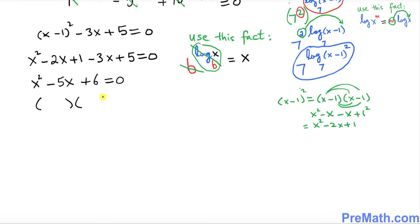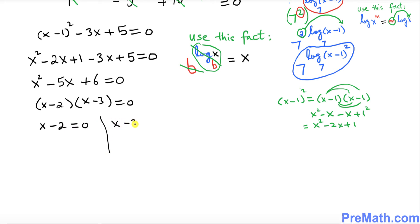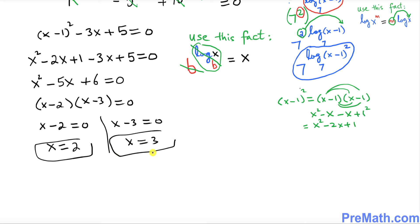This quadratic can be factored as (x minus 2)(x minus 3) equals 0. Splitting them: x minus 2 equals 0 gives x equals 2, and x minus 3 equals 0 gives x equals 3. Those are our two solutions.